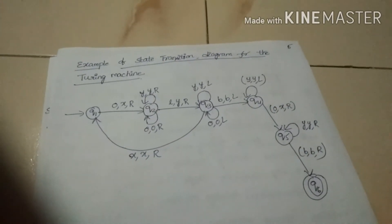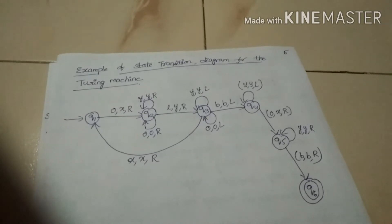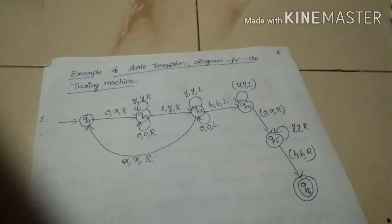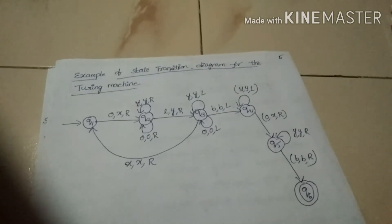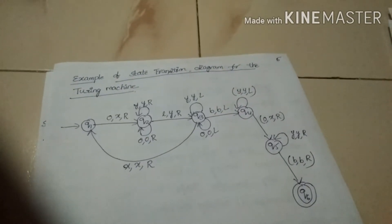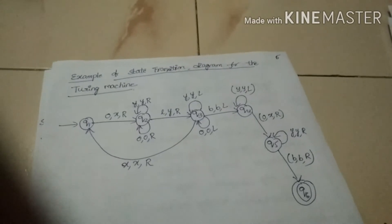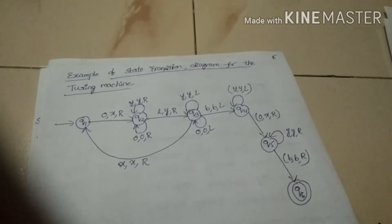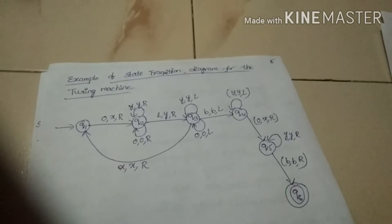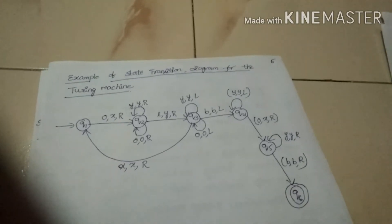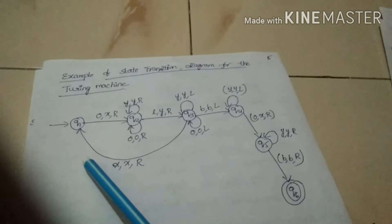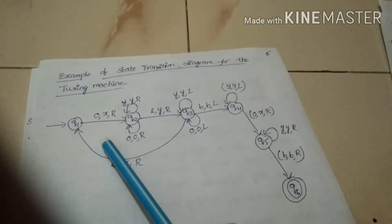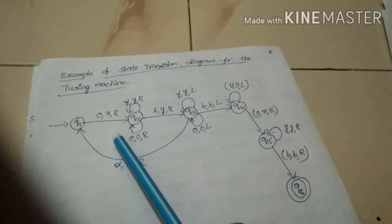From the state transition diagram, there is a directed edge from Q1 to Q2 with the label (0, X, R). The current symbol 0 of the Turing machine will be replaced by X, and the head position will move in the right direction.